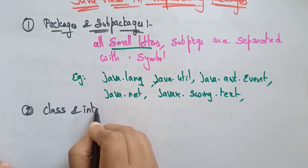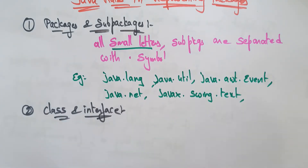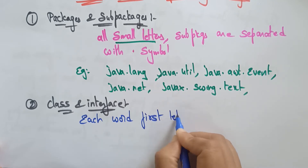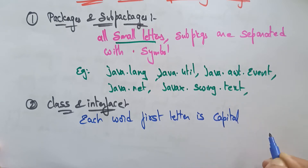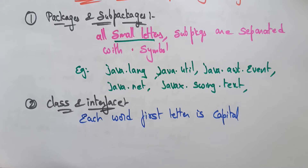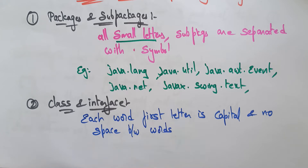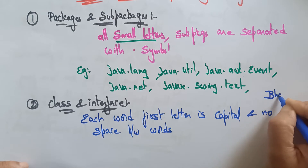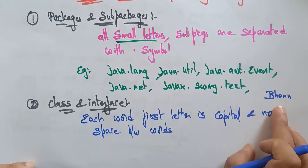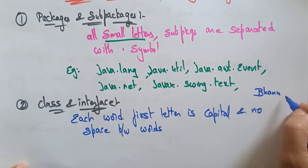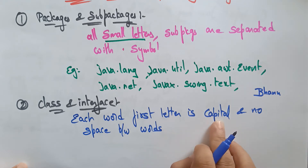The second rule is how to differentiate a class and an interface — how do you know which word is a class and which is an interface? Each word's first letter is capital, and there is no space between the words. This is very important. For example, 'Bhanu' starts with a capital letter so that is a class. If you have two words like 'Bhanu' and 'Priya', don't give a space — if you do, it becomes two words and will be an error.